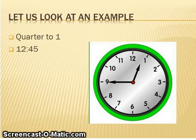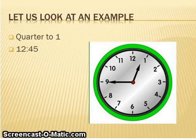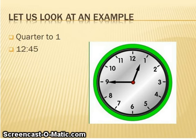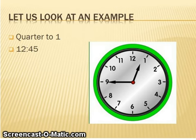Let us look at this clock. The minute hand is on the nine, so we know that it is quarter to. Look at the hour hand — quarter to one. Now let us look at the digital clock. We always start from the hour hand, and we always check what the hour hand passed. Which number did the hour hand pass? It passed the twelve, so we write twelve-forty-five.